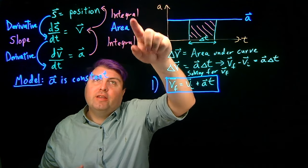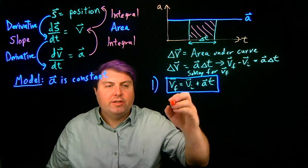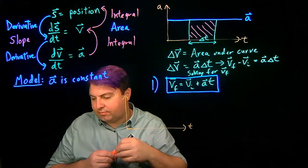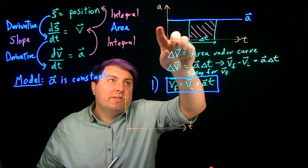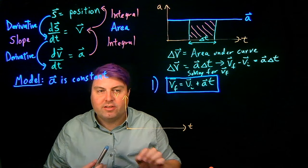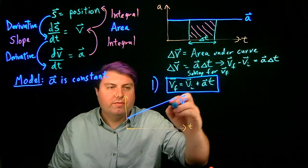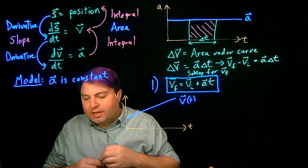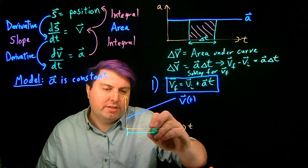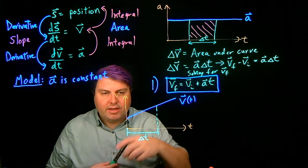Now we want to do the same thing for finding the integral of velocity to get position. Looking at the velocity versus time curve: if acceleration is constant, then the slope of velocity is constant, and functions with a constant slope are lines. So our velocity versus time curve is a straight line. We pick a starting time and an ending time — this is our delta t — and we want to find the area under this curve.